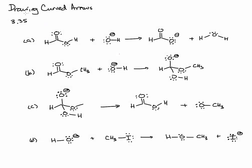In this screencast we're going to talk about drawing curved arrows to track the flow of electrons in a chemical reaction. With the red pen I'm going to draw arrows that show how the electrons move in acid-base reactions. We're also going to see some other types of reactions in this problem, chapter 3, problem 35.